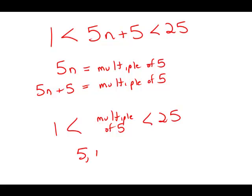Well, there's 5, 10, 15, and 20. Those are the multiples of 5 that are greater than 1 and less than 25. And there are 4 of them. So this is answer choice B.